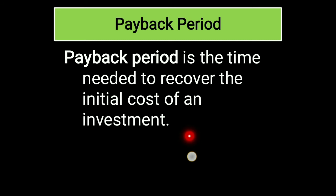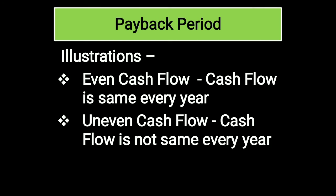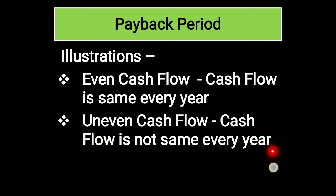In the examination there are two types of sums based on payback period: first is even cash flow and second is uneven cash flow. Even cash flow means whenever the cash flow is the same for every year. In the previous example, every year I was getting revenue of rupees 10 lakhs — that is an example of even cash flow. Uneven cash flow means the cash flow is not the same every year. For example, in the first year getting 10 lakhs, second year 15 lakhs, third year 20 lakhs — that is uneven cash flow.